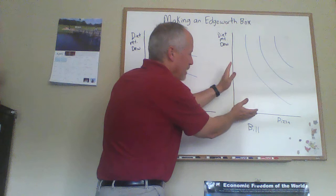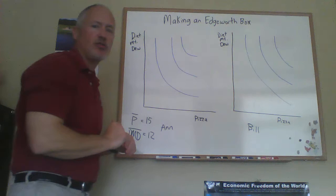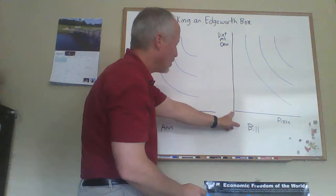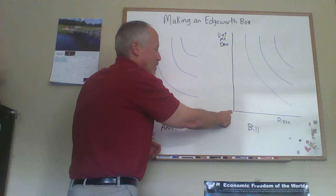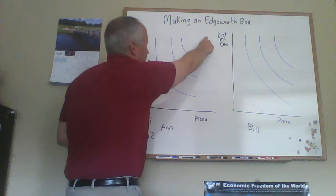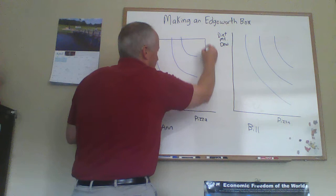To create the box, think about what we're going to do: we're going to take Bill's diagram, pick it up, turn it over, and set it down on top of Ann's graph. So we're going to have Ann's axes in the bottom left-hand corner. When we turn Bill's diagram upside down, the right-angle corner will go up and be over here on the box. In effect, we're taking Bill's diagram around here and fitting it on like this.